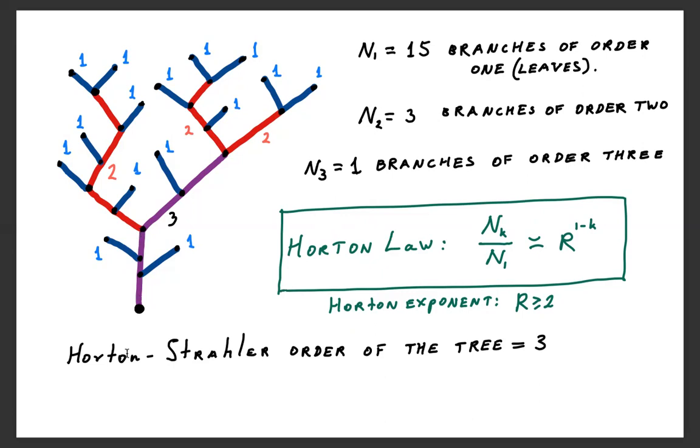Now if we deal with the numbers N_1, N_2, and N_3 here, as we sample larger and larger trees, if we fix k and look at the ratio N_k over N_1.